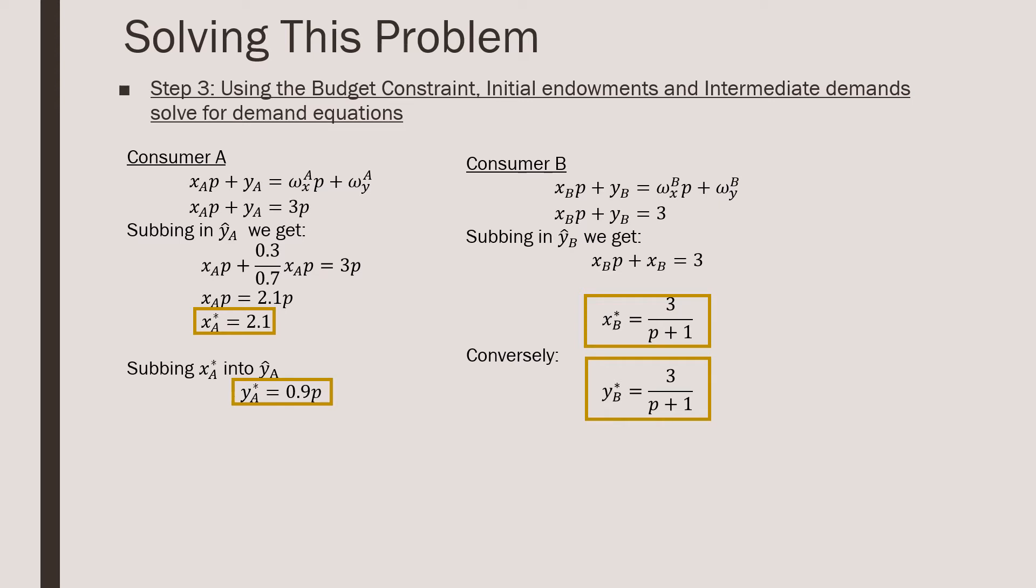Step number three is that we're going to use our budget constraint and initial endowments and intermediate demands to solve for our demand equation. This is just intermediate micro and we're just going to be plugging in these results one by one. So for consumer A, we remember we just plug in our initial endowments and our intermediate demands, and with a little bit of algebra, we find that xA is equal to 2.1.